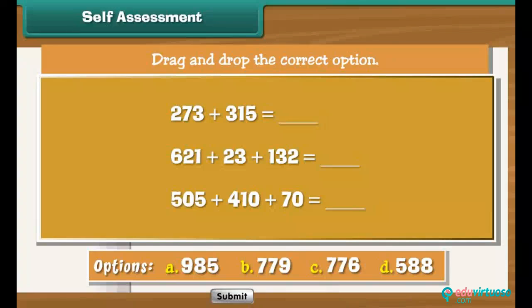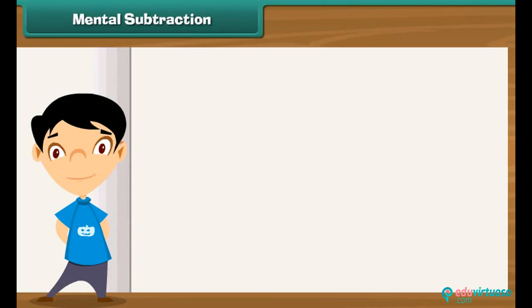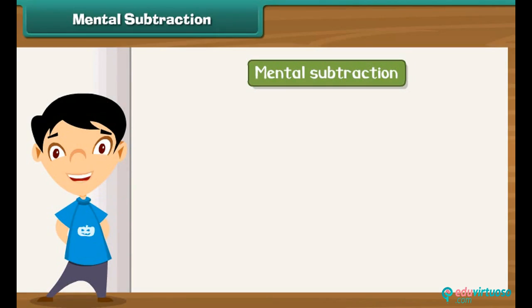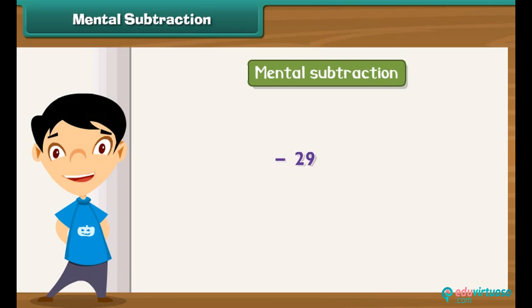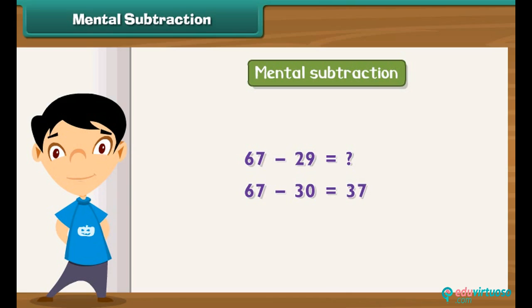Hey kids, let us know how much you have learnt. Add the numbers and choose the correct sum. We can perform mental subtraction in a manner similar to mental addition. Zero is the easiest number to subtract, so we will always try to make the number being subtracted end with 0. To subtract 29 from 67, we subtract 30 instead of 29 from 67 to get 37. Since we subtracted an additional 1, we add 1 to the difference, giving 38.